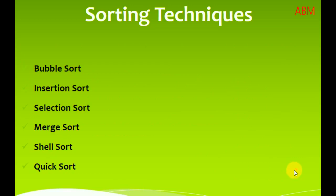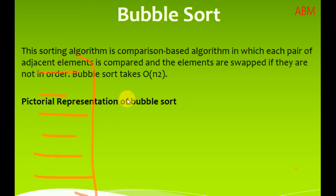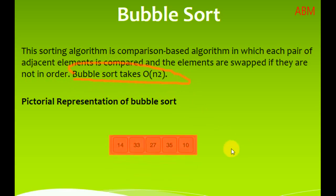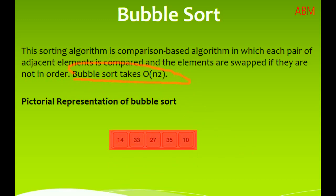There are different types of sorting techniques: bubble sort, insertion sort, selection sort, merge sort, shell sort, and quick sort. We will discuss all of these in this video. The first one is bubble sort — a comparison-based algorithm in which elements are compared with each other. The time complexity of bubble sort is O(n²).